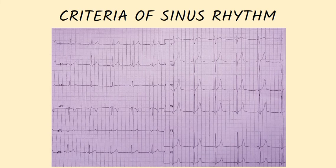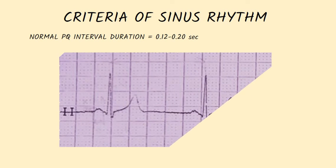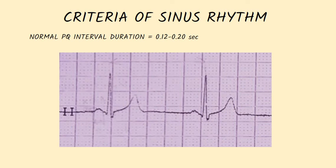Each P wave is followed by a QRS complex. Normal PQ intervals have a duration that ranges from 0.12 to 0.20 seconds. On this ECG, the duration of the PQ interval is 0.20 seconds.